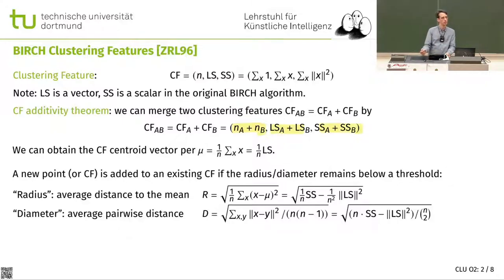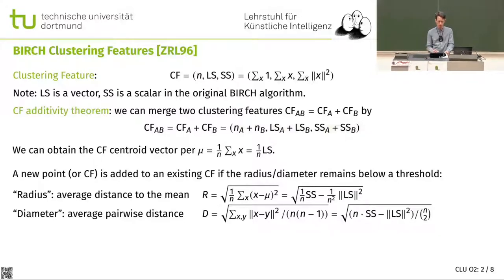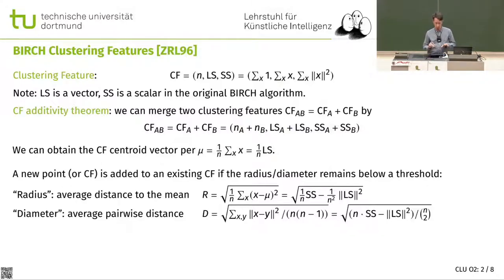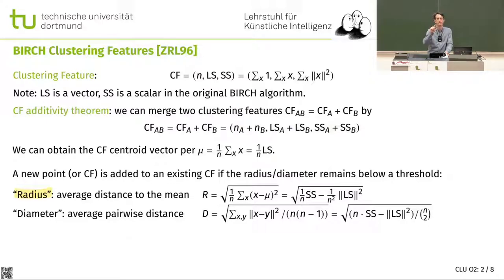The additivity is of course integral to rebuilding and recompressing the tree. I can easily obtain the center of a clustering feature by dividing the linear sum by the count. They also defined a number of measures for deciding when to merge points and as distance functions. The underlying idea is to have something like a radius of the aggregated data. Since they only have a statistical aggregate and don't know the maximum distance, they use something like a standard deviation.